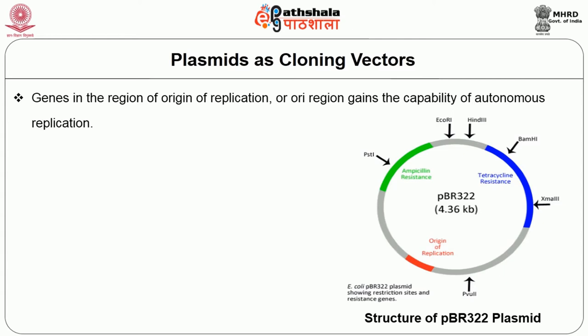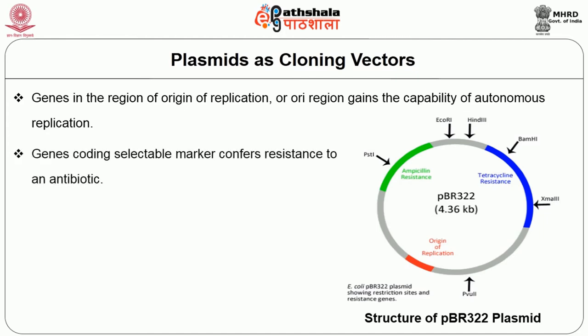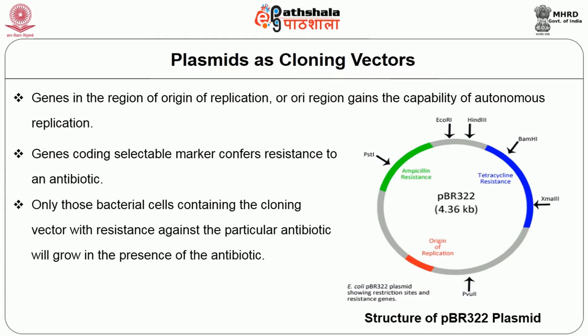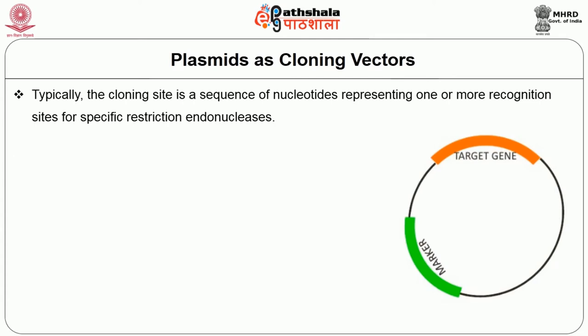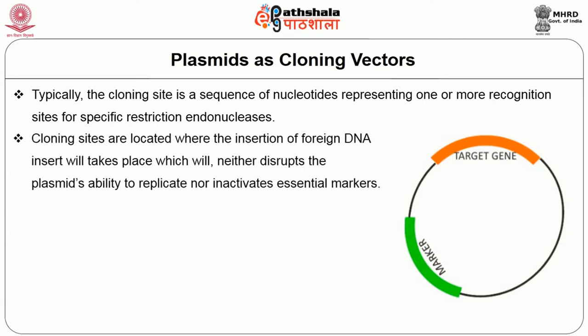Genes in the region of origin of replication (ORI) gain the capability of autonomous replication. Genes coding for a selectable marker confer resistance to an antibiotic. Only those bacterial cells containing the cloning vector with resistance to that antibiotic will grow in the presence of the antibiotic — therefore, growth on antibiotic-containing media specifically selects for plasmid-containing cells. The cloning site is a sequence of nucleotides representing one or more recognition sites for specific restriction endonucleases, located where insertion of foreign DNA will not disrupt the plasmid's ability to replicate or inactivate essential markers.